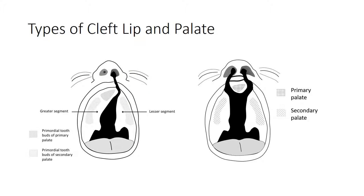Here are two diagrams demonstrating a unilateral cleft lip and palate on the left, and a bilateral cleft lip and palate on the right. The unilateral cleft separates the alveolar arches and palate into two segments: a smaller lesser segment and a larger greater segment — terms that are useful in radiology reports. When there is a bilateral cleft lip and palate, it separates the palate into the secondary palate and the primary palate, also termed the premaxilla or premaxillary segment.